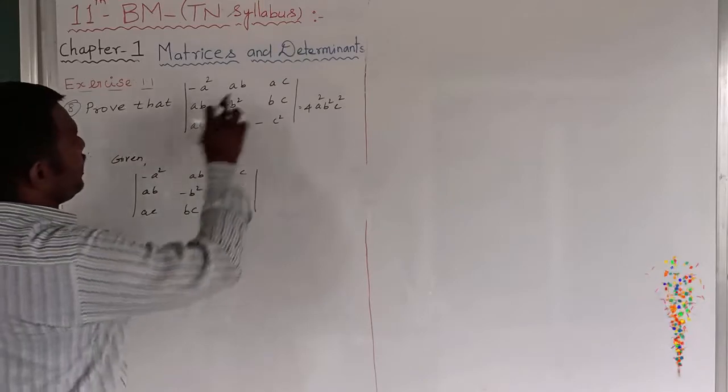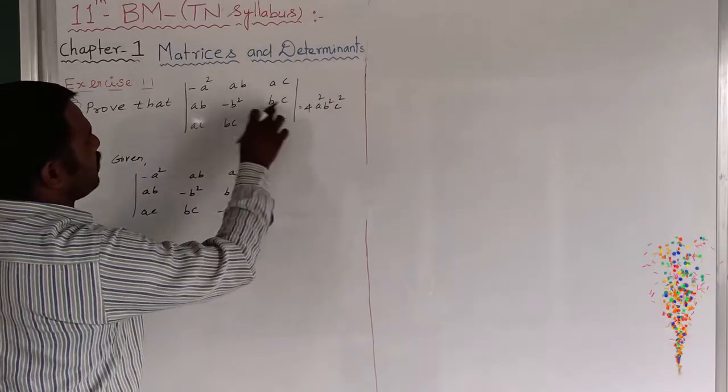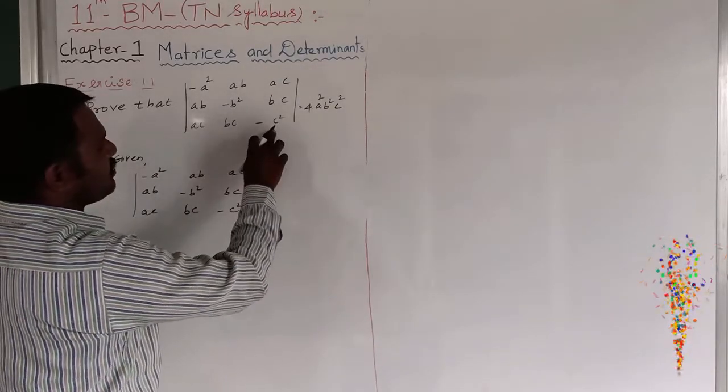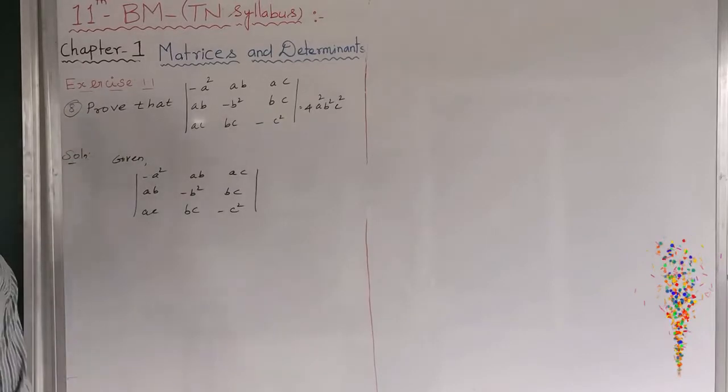Question 8 proves that the determinant with elements minus a squared, ab, ac in the first row; ab, minus b squared, bc in the second row; and ac, bc, minus c squared in the third row equals 4 a squared b squared c squared.